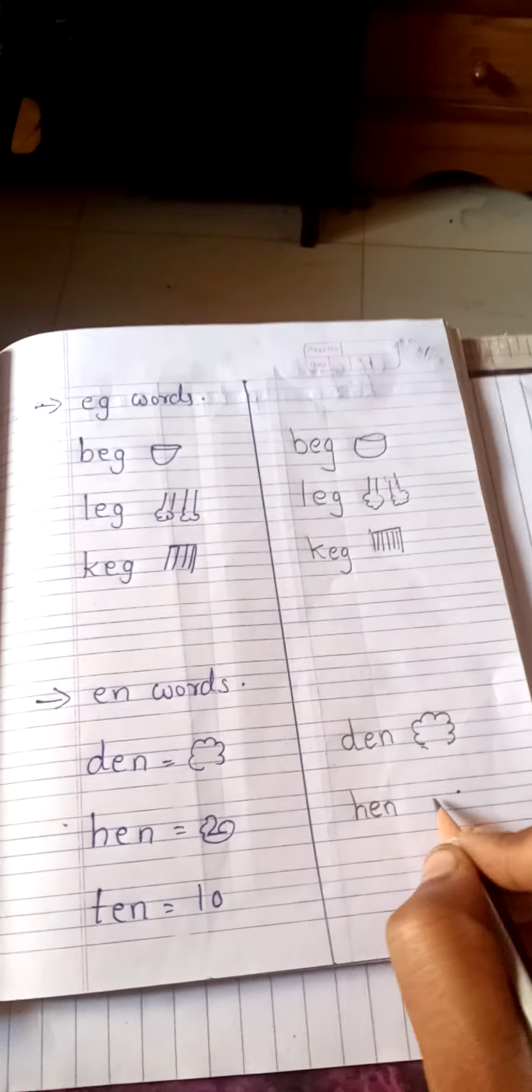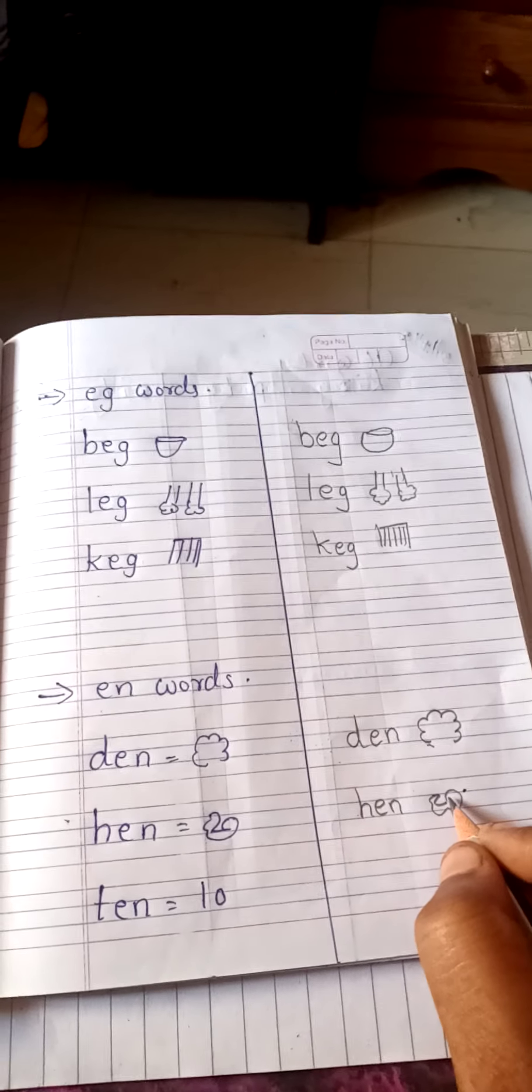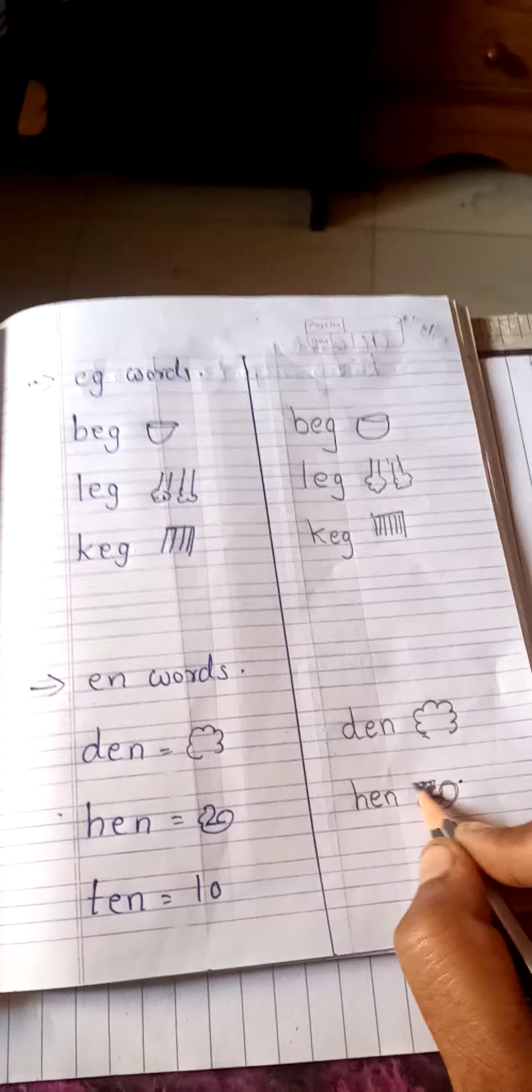Now next, H-E-N, hen. So draw a small hen, draw a small hen.